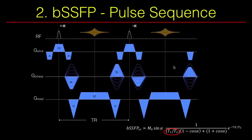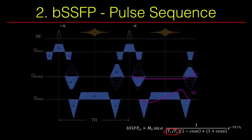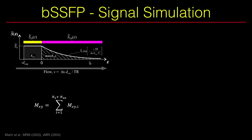The second sequence is balanced SSFP. All gradients on all axes are completely compensated — the zeroth-order gradient moment is zero in all three axes, making it very well flow-compensated. The M1 moments are also very close to zero at echo time. The steady-state signal of balanced SSFP is T2/T1 weighted. Signal computation in balanced SSFP in the presence of flow is more involved because of complete refocusing gradients: even after spins exit the imaging slice, they still contribute to the signal. The total signal is the summation of contributions from both the excited slice and out-of-slice spins.